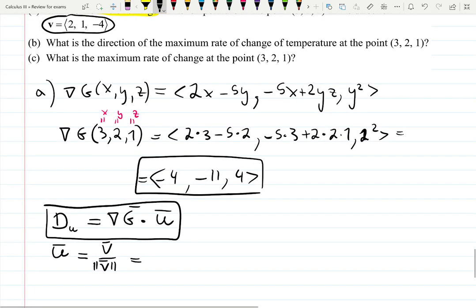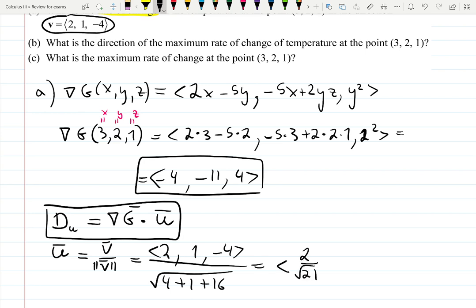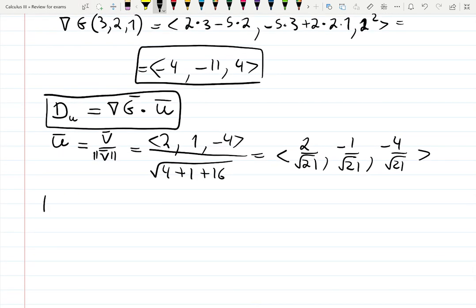v is given as <2, 1, -4> divided by the square root of 4 + 1 + 16, that is square root of 21. So it's going to be <2/√21, 1/√21, -4/√21>.